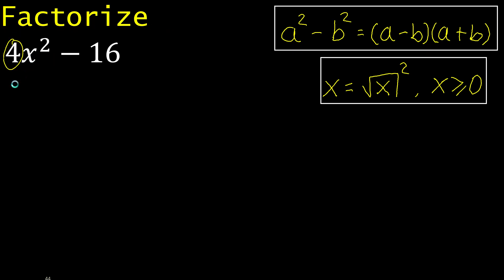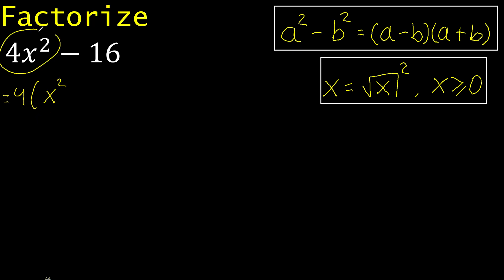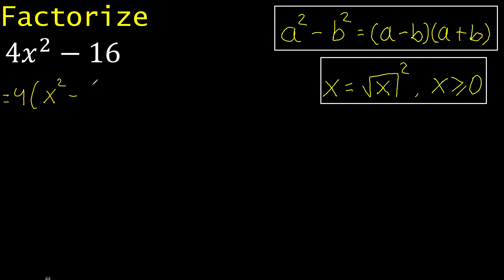Here is 4, therefore like this, because 4 multiplied by x exponent 2 is here, minus 16 divided by 4 is 4.